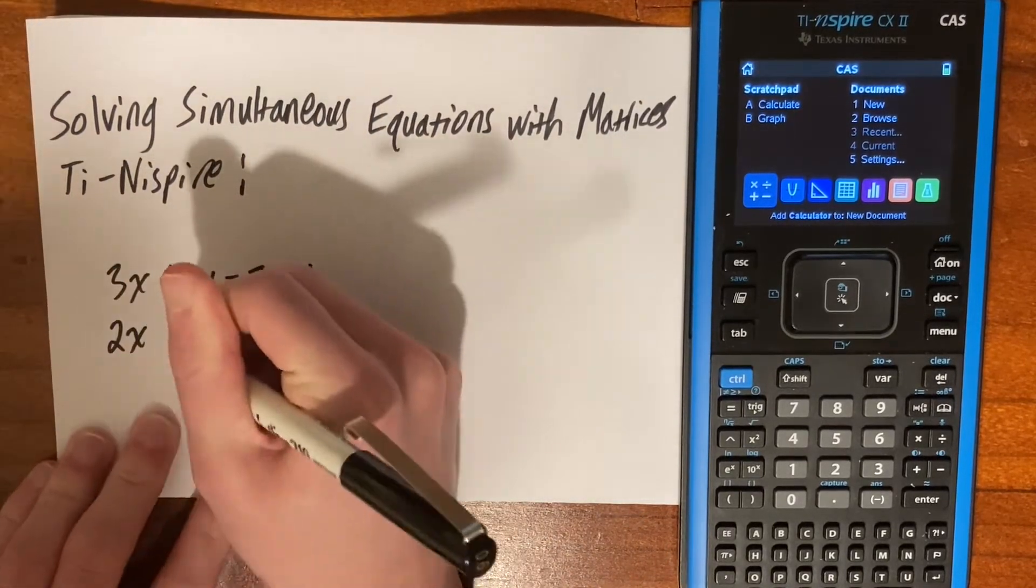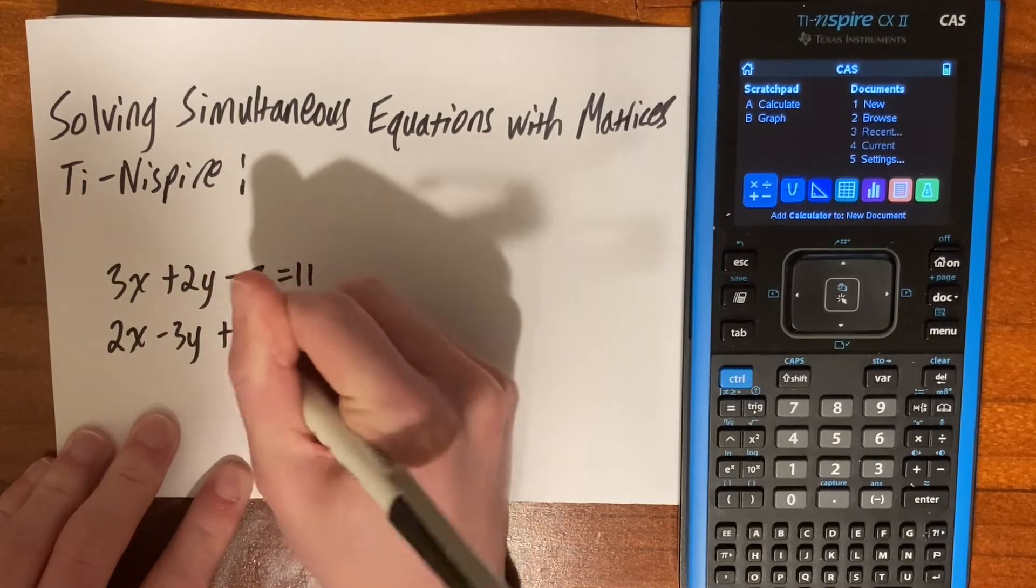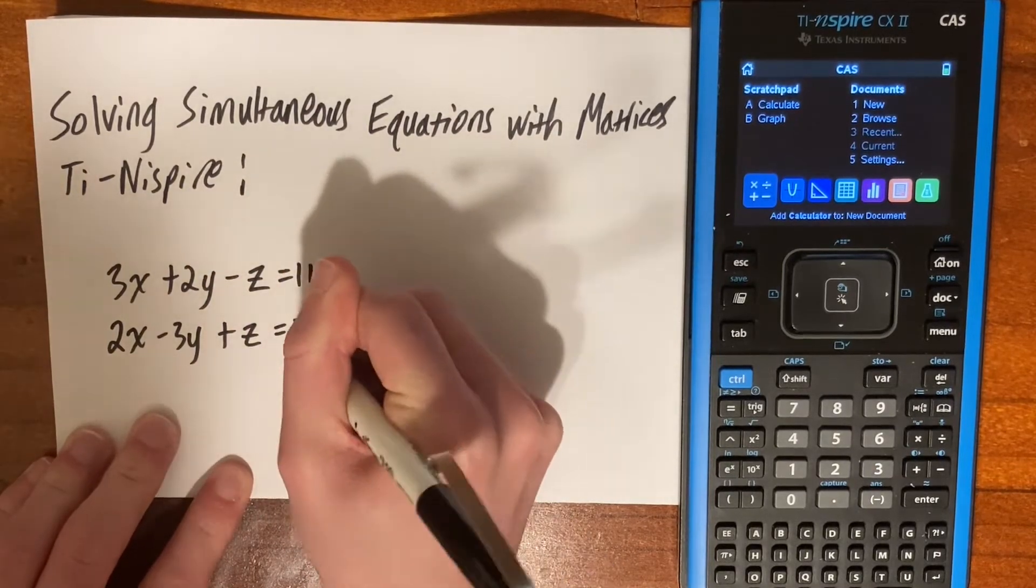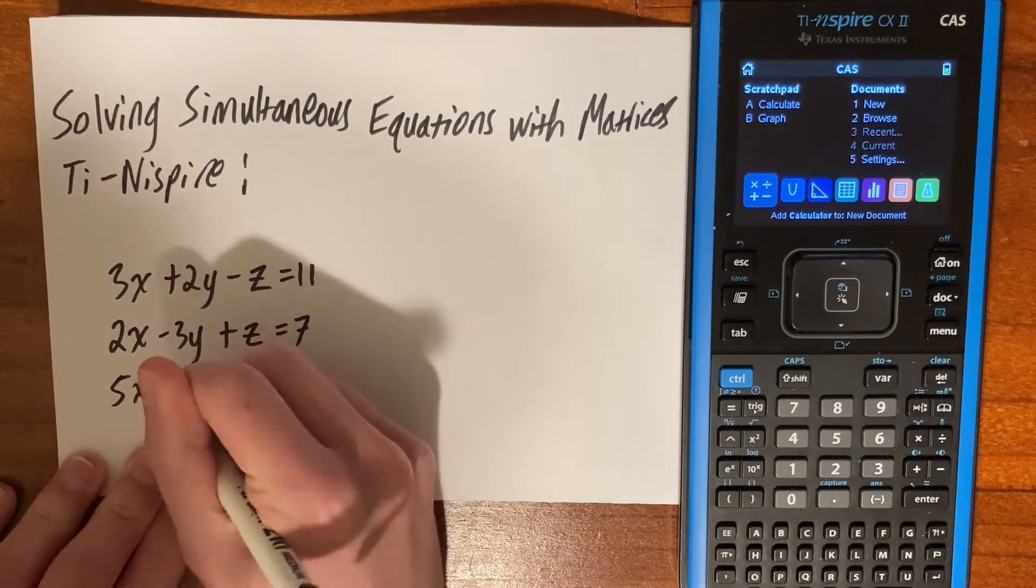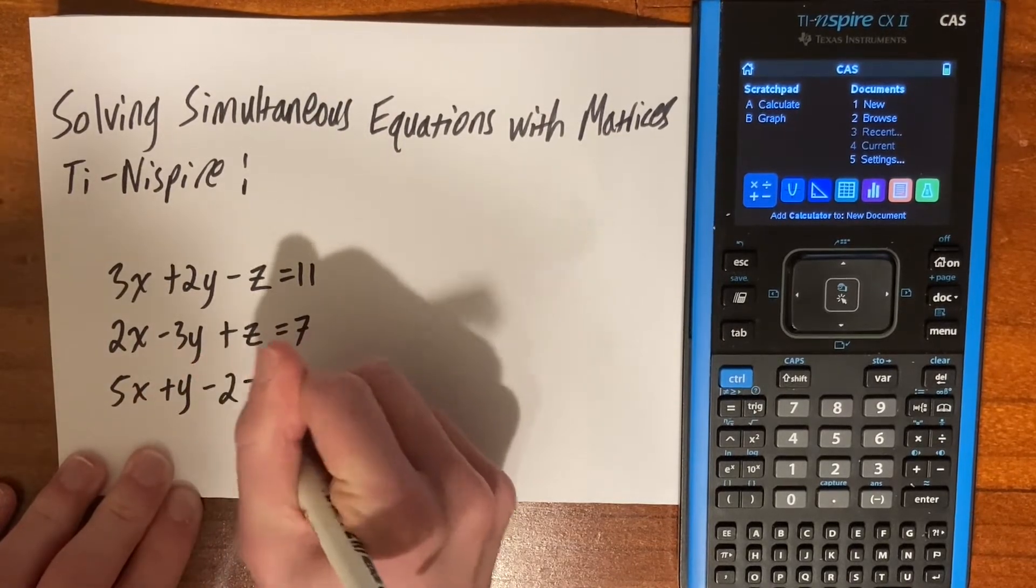In this example, I'm going to use three equations instead of two, because if you can do three, you can definitely do two. So we might as well do three, because it's a bit harder.